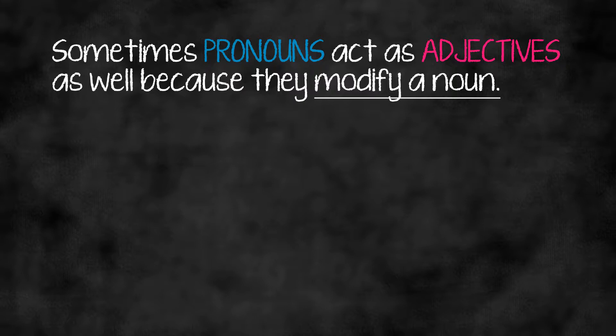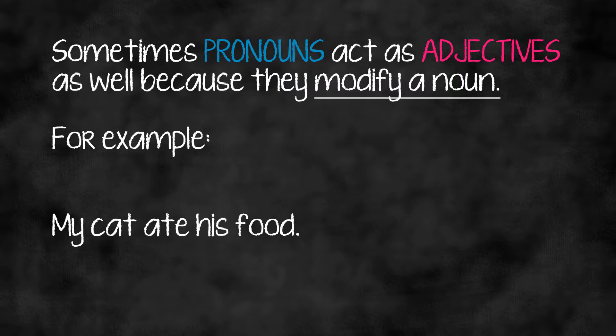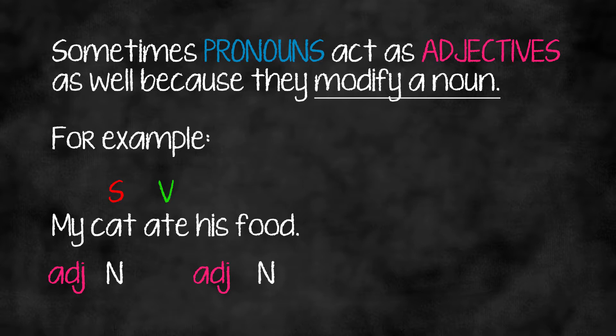Sometimes pronouns act as adjectives as well, because they modify a noun. For example: 'My cat ate his food.' The verb is 'ate' — it is an action. Our subject is 'cat' — who or what ate? The cat ate. 'Cat' is a noun. There's another noun: 'food.' In this case, 'my' gives us information about 'cat' — it is an adjective simply because it is not 'a' or 'the.' 'My' is also a pronoun, but here it's acting as a modifier of 'cat' because it gives us information about 'cat,' which is a noun.